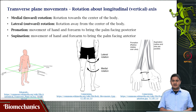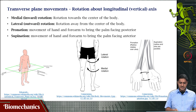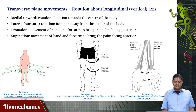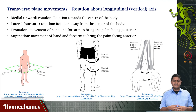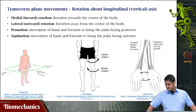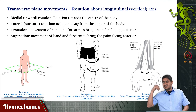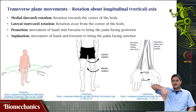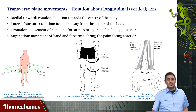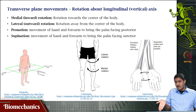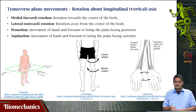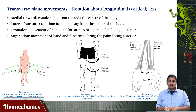Then you have pronation and supination. Pronation is the movement of the hand and forearm so that the palm will face the posterior — the palm is facing the back. That is called pronation. When the palm is facing the front, facing anterior, that is called supination.